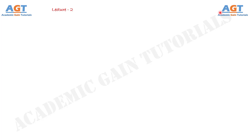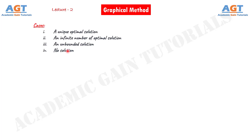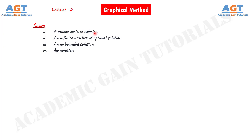Welcome to Academic Game Tutorials. This is our second lecture video on Operations Research. Here we are learning the graphical method. As we have discussed in previous lecture, we usually get to see four types of cases in graphical method. In lecture number one, we discussed how to solve and get a unique optimal solution for a linear programming problem using graphical method. We have covered the first case in our previous lecture, and in this lecture we will discuss the second case and see how to solve a linear programming problem to get an infinite number of optimal solutions by graphical method.